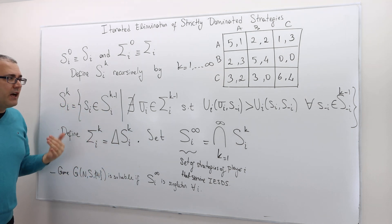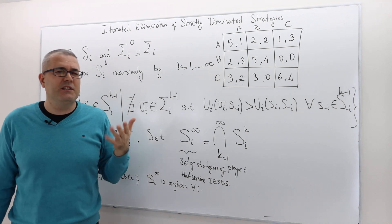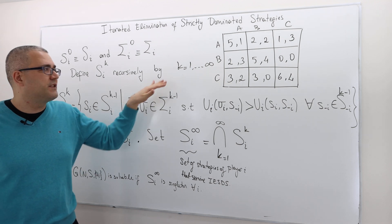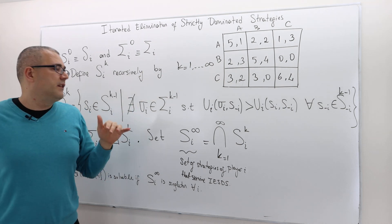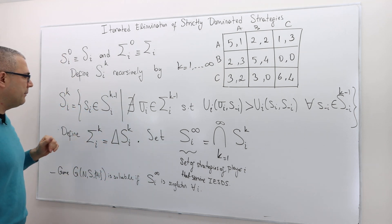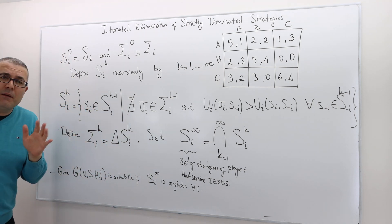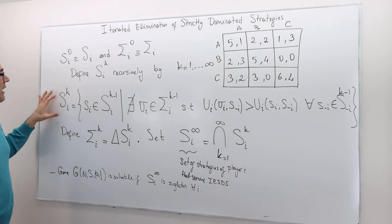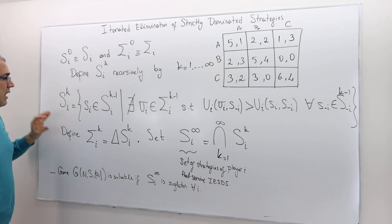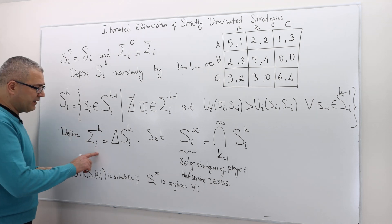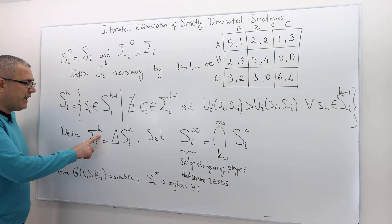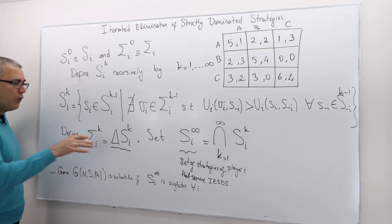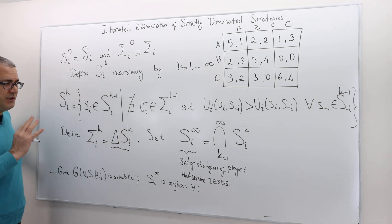If the game is finite — meaning all players have finitely many strategies — this process must stop at some finite number of steps. Even for many games, the process stops in finitely many stages. But in some games it may continue forever if players have infinitely many strategies. The mixed strategies that survive stage K are simply the probability distributions over the remaining pure strategies.